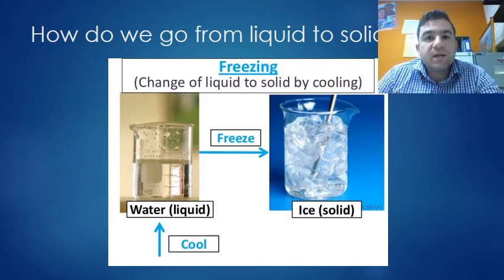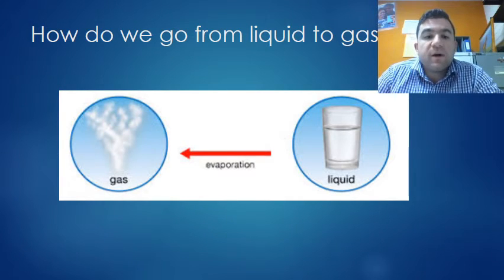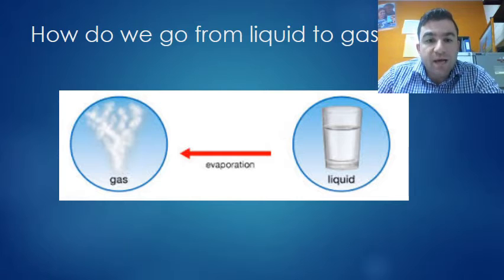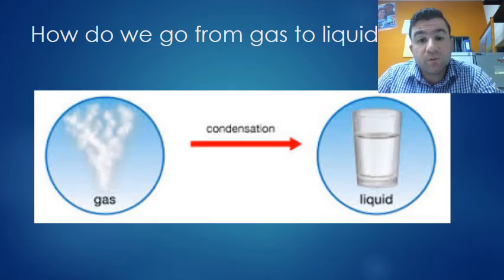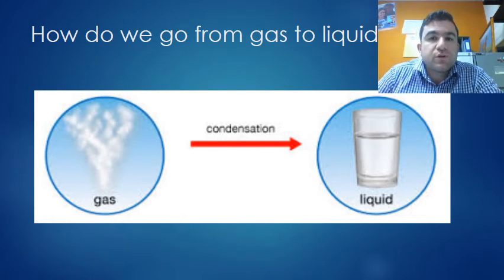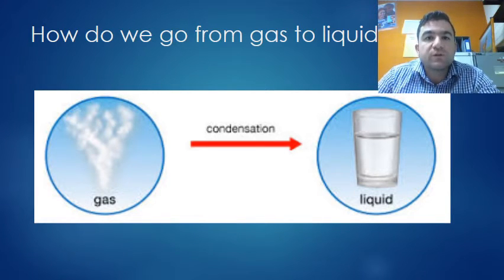How do we go from a liquid to a gas? Evaporation. Again, we're applying heat, turning it into a gas. How are we going from a gas to a liquid? That's called condensation. Think about when you go to the service station, you buy a cold drink and take it out of the fridge. On the outside of the bottle it gets wet because the air around it is cooling down and it turns into a liquid.